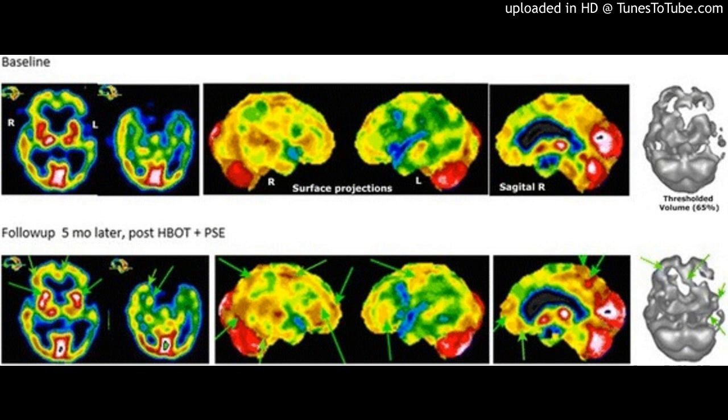Upper row: a baseline single photon emission computed tomography image revealed extensive left hemispheric underperfusion and multiple localized underperfusions in the right hemisphere. Bilateral involvement of parts of the dorsolateral prefrontal cortex, extensive underperfusion in the temporal lobes more on the left, and to a lesser extent in the orbitofrontal areas.